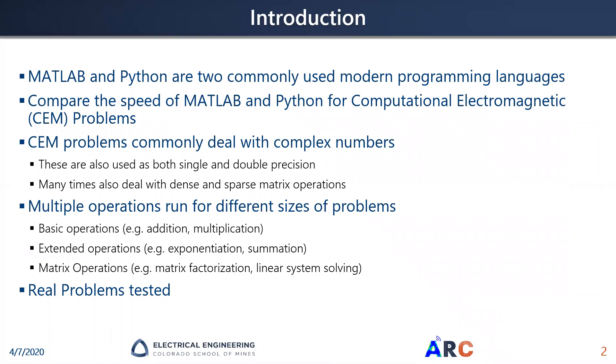As you may know, MATLAB and Python are two of the most common modern programming languages used for things such as simulation and data analysis. And so here what we're doing is comparing these speeds specifically for computational electromagnetic problems that typically deal with complex numbers in both single and double precision. We're going to test this with a variety of different problems, along with a couple of real problems and see how those perform.